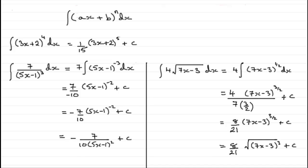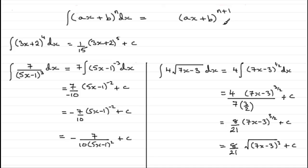To integrate something of this particular form, all we do is write down ax plus b but add 1 to the power n, giving n plus 1. Then we realise that when we differentiate this, we end up with a times n plus 1 at the front — and we don't want that, so we divide it out: 1 over a times n plus 1. And then we've got that constant of integration.